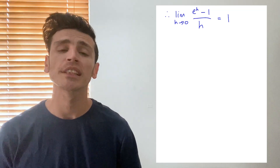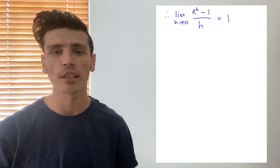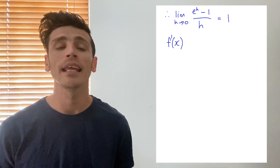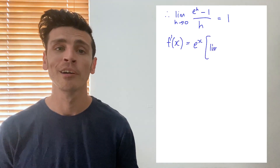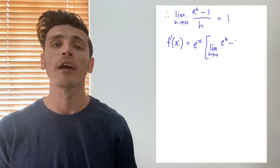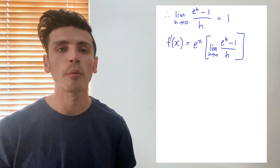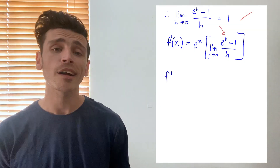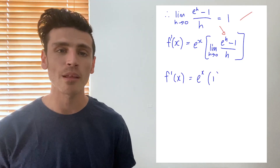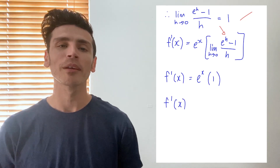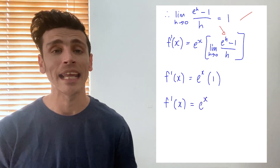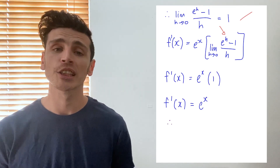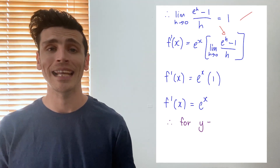Now we substitute 1 into our formula. Our formula was reading e to the power of x multiplied by the limit as h approaches 0 of e to the power of h minus 1, all over h. We've just learned that limit equals 1. So our equation now reads: the derivative equals e to the power of x multiplied by 1. Any number multiplied by 1 gives itself, so e to the power of x multiplied by 1 is e to the power of x. There you have it — we've used the limit definition to show that the derivative of e to the power of x remains e to the power of x.